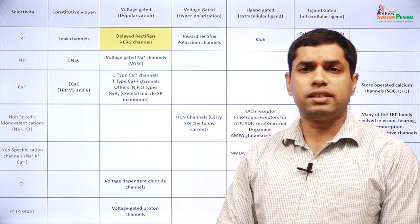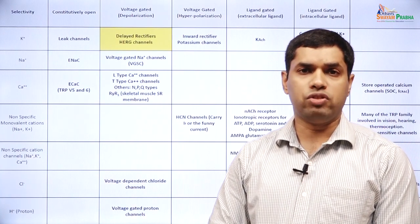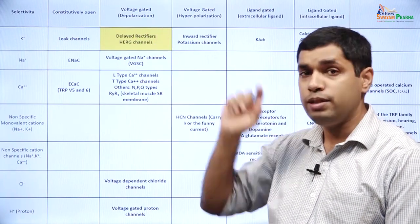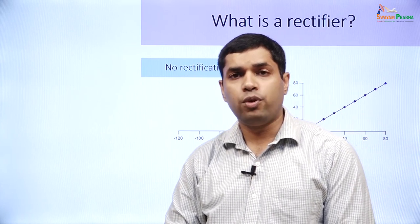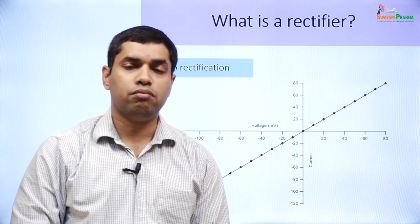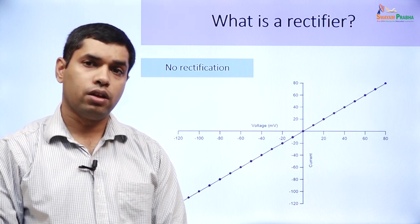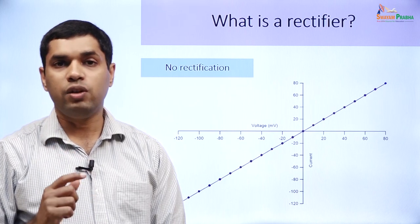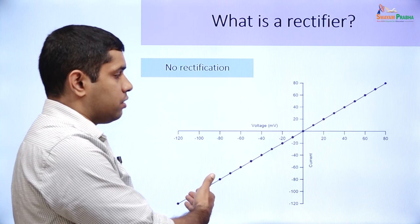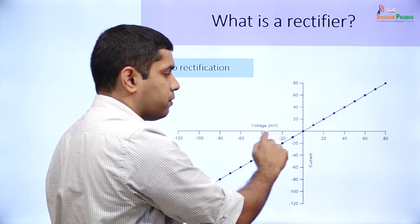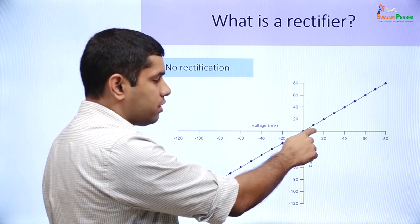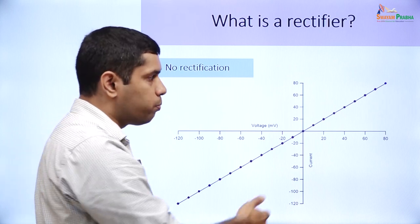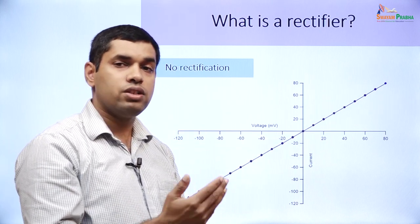Let us now look at the delayed rectifier potassium channel. As its name suggests, it is a potassium channel that is also voltage-gated by depolarization. Before discussing this channel, let us understand what we mean by the term rectifier. A rectifier is a channel that permits the passage of current in only one direction. Looking at a graph showing current at different voltages, the slope of the line provides the conductance — the current per unit voltage.